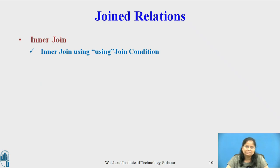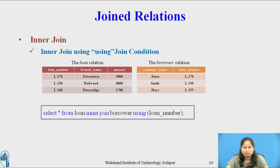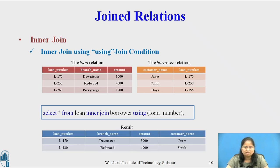Consider the inner join using the using join condition for relations loan and borrower. The query is: SELECT * FROM loan INNER JOIN borrower USING (loan_number). The result has the loan number attribute listed only once in the join result.